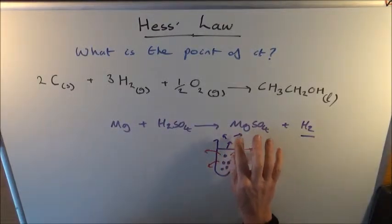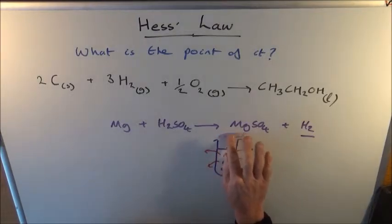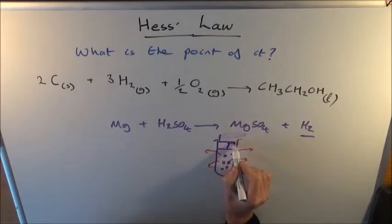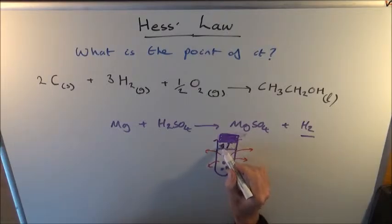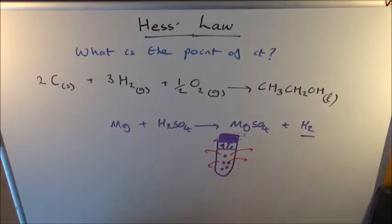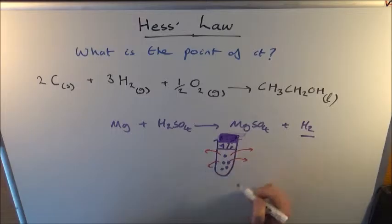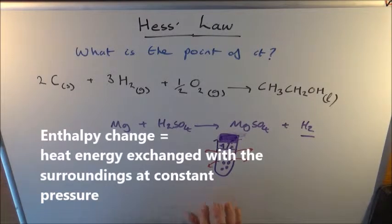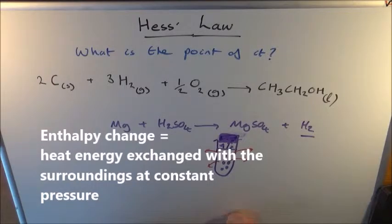It's at constant pressure in the sense that we're allowing the hydrogen gas to escape, so the pressure is not building up. But if we did this in a sealed vessel — a very strong test tube with a bung — the hydrogen gas produced is not allowed to escape, so the pressure builds up. Under those conditions, the energy released as heat is not the enthalpy change; it's actually the internal energy. The definition of enthalpy change is the energy exchanged with the surroundings at constant pressure.